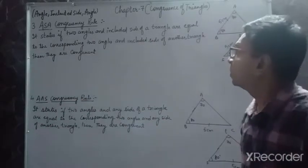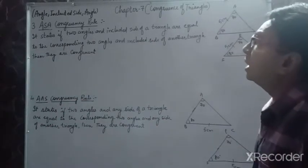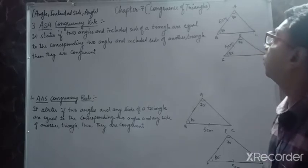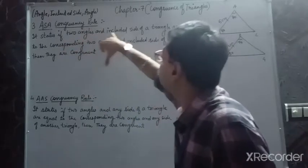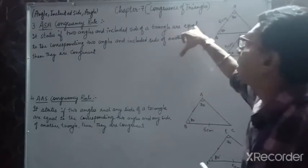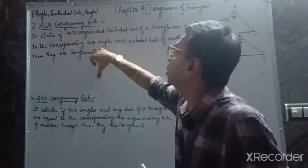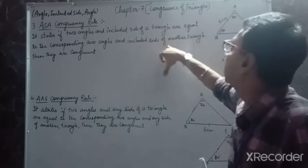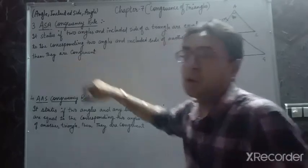It states that if two angles and the included side of a triangle are equal to the corresponding two angles and the included side of another triangle, then they are congruent.